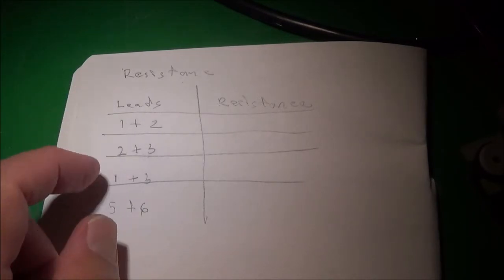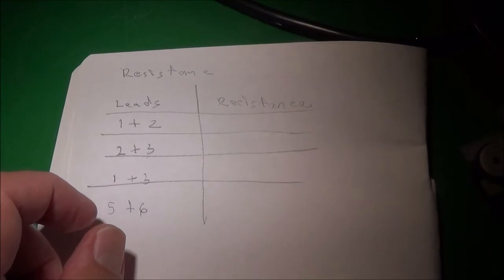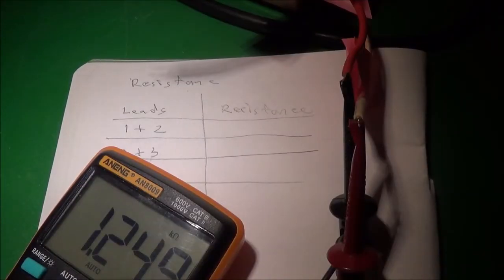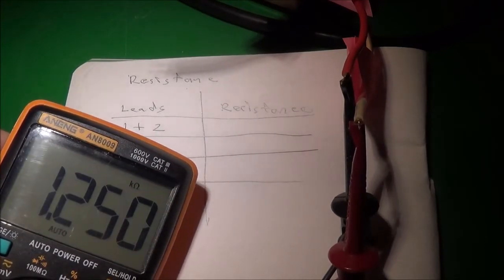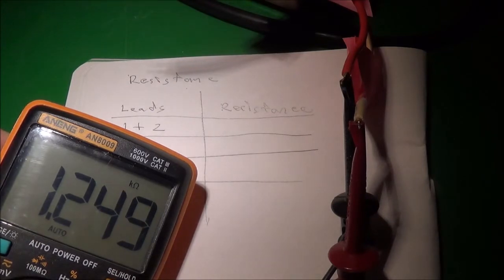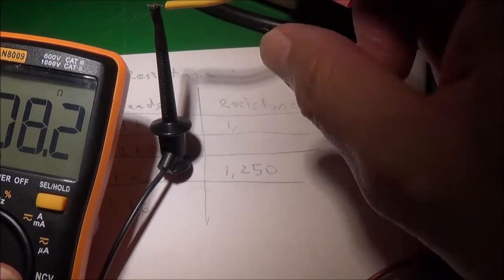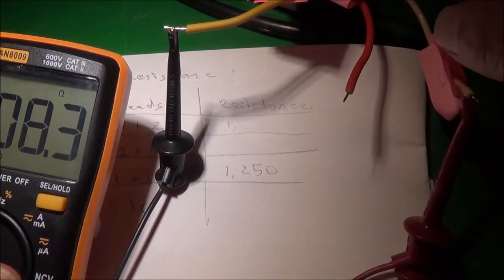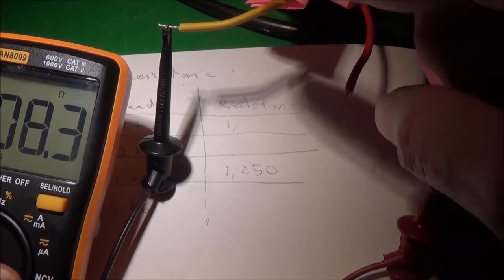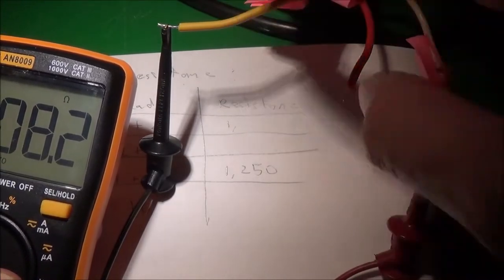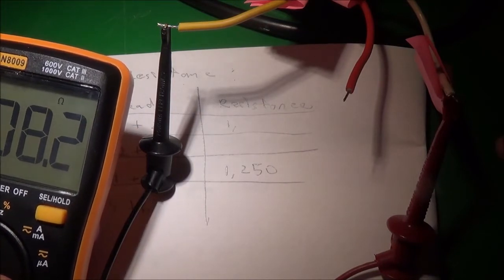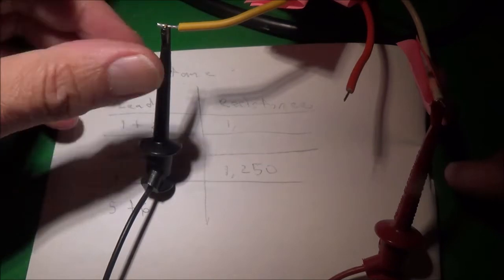Before I start, I made myself a little chart here. It's not pretty, but it'll do the job. See here leads, resistance between lead one and two, two and three, between one and three, and then five and six. So right now I'm measuring between the leads one and three, which is the white and the red. And here I've got 1250 ohms, you can say, or 1.25 K.